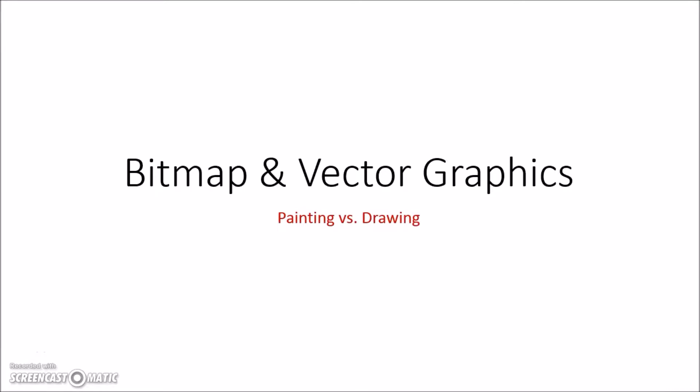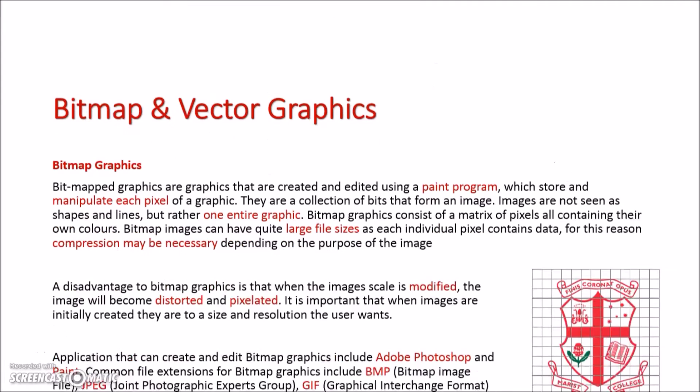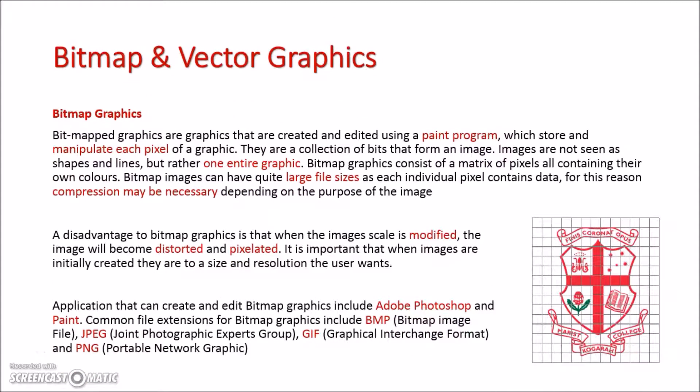Now we're going to look at bitmap and vector graphics, which are both ways that graphics can be created. Firstly, we'll look at bitmap graphics, and they are created using a paint program. In a paint program, you have the ability to manipulate each pixel, and each pixel can have a different color and a different bit depth allocated to it.